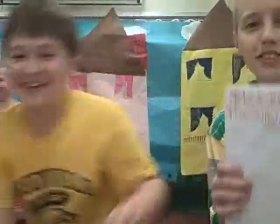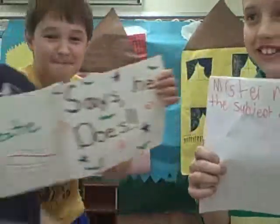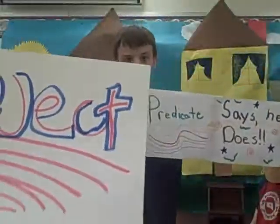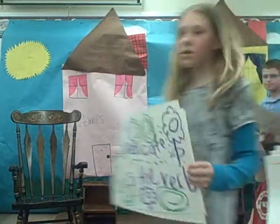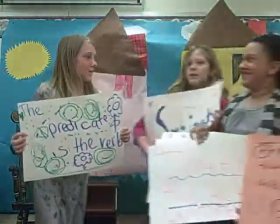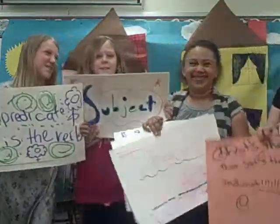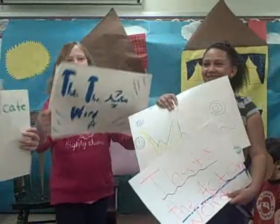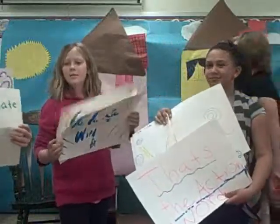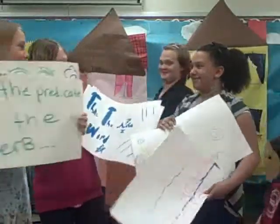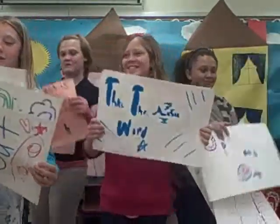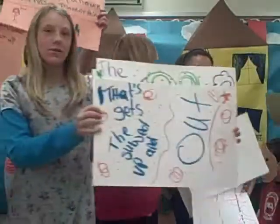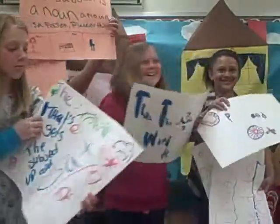Mr. Morton is the subject of the sentence, and what the predicate says he does. The subject is a noun — that's a person, place, a thing — it's who or what the sentence is about. And the predicate is the verb, that's the action word, that gets his subject up and out.